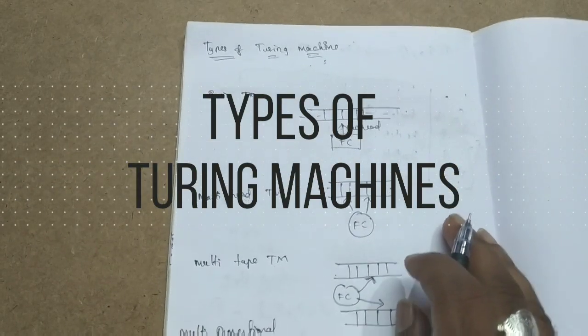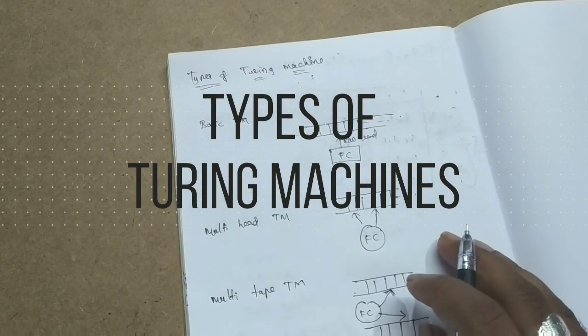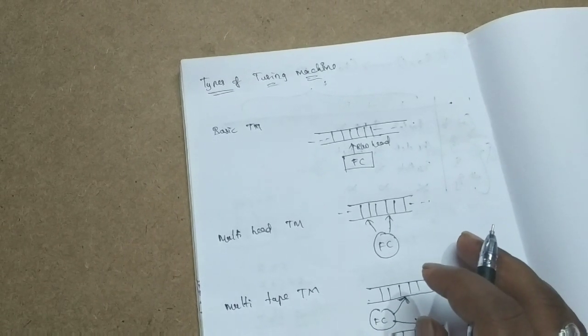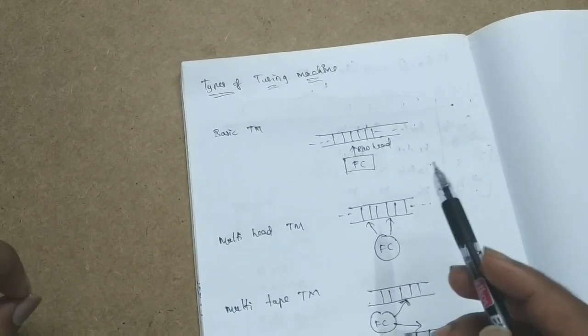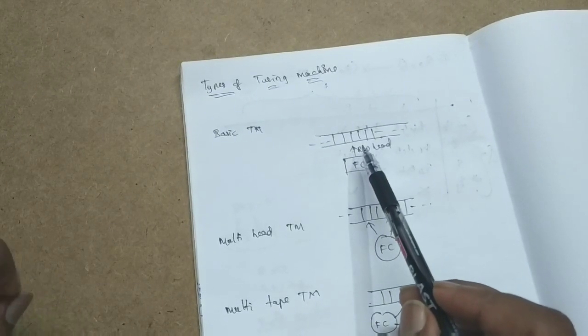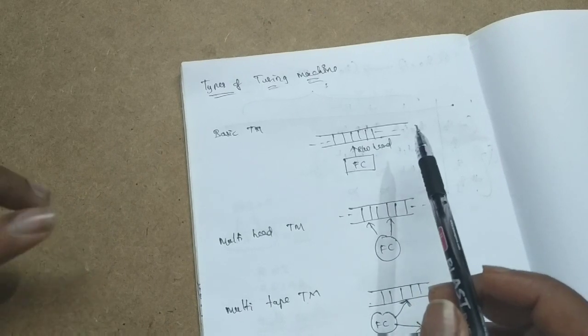Hi friends, this is Rajshikar. Welcome back. In today's class, we are going to study about types of Turing machine. The basic type Turing machine details in the model which is invented by Turing.